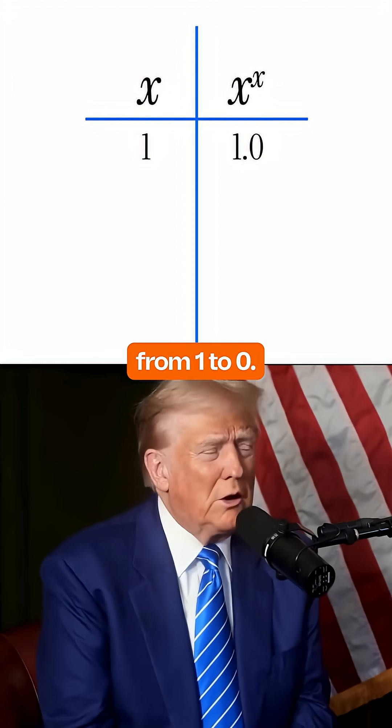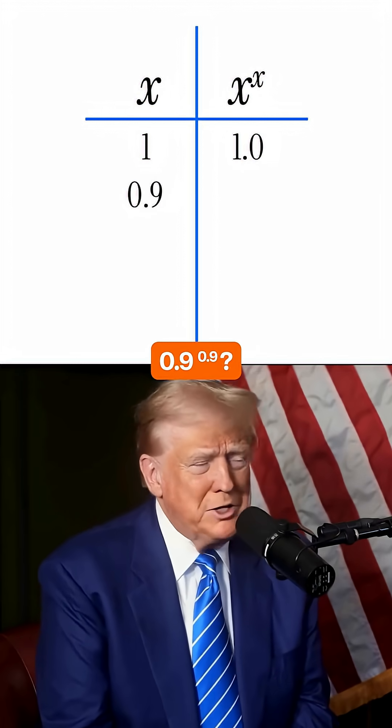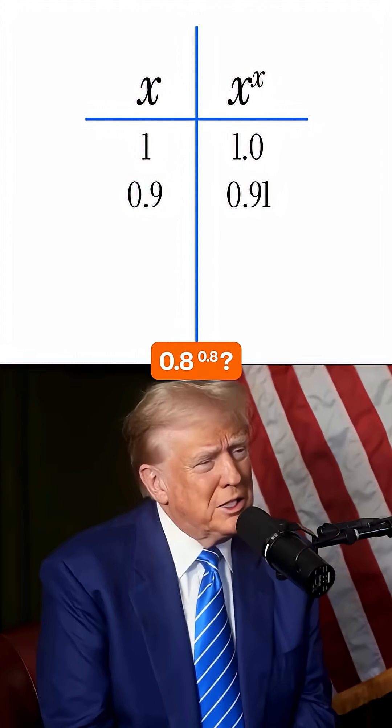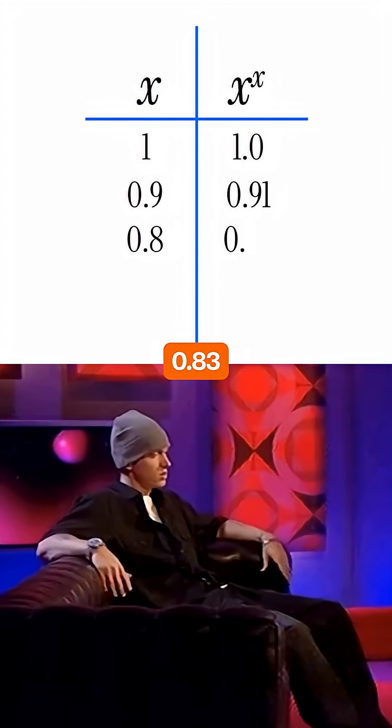Okay, now let's go all the way from 1 to 0. Tell me, what's 0.9 power 0.9? 0.91. 0.8 power 0.8? 0.83.